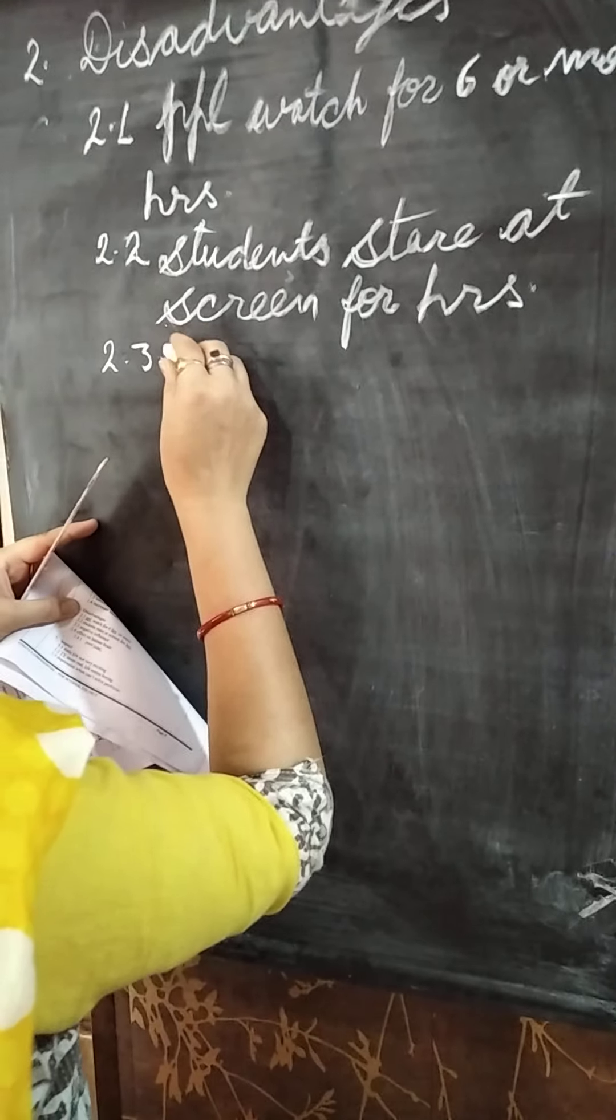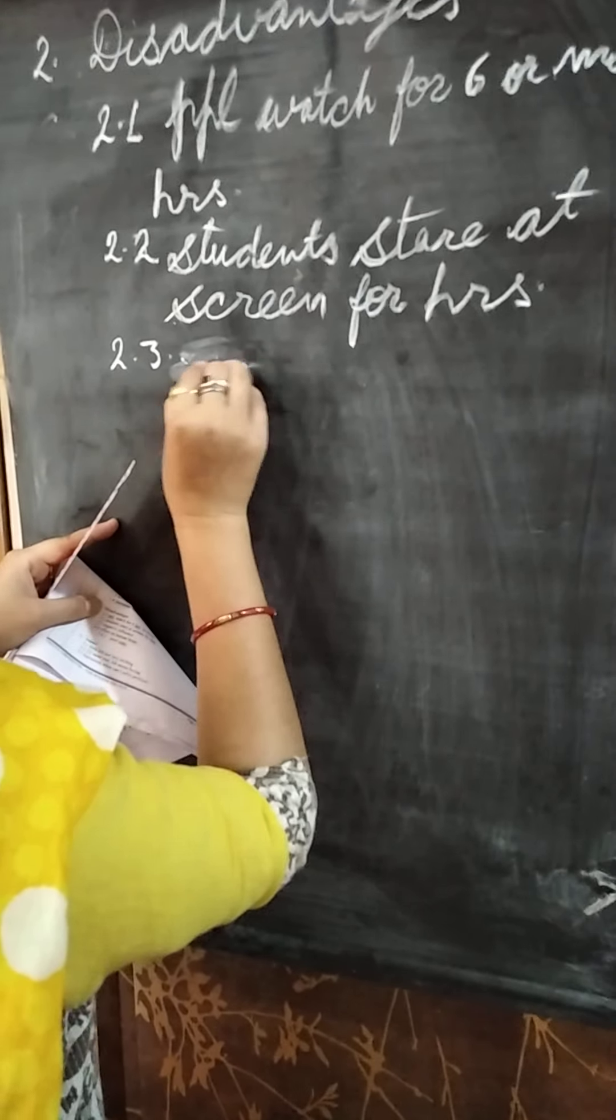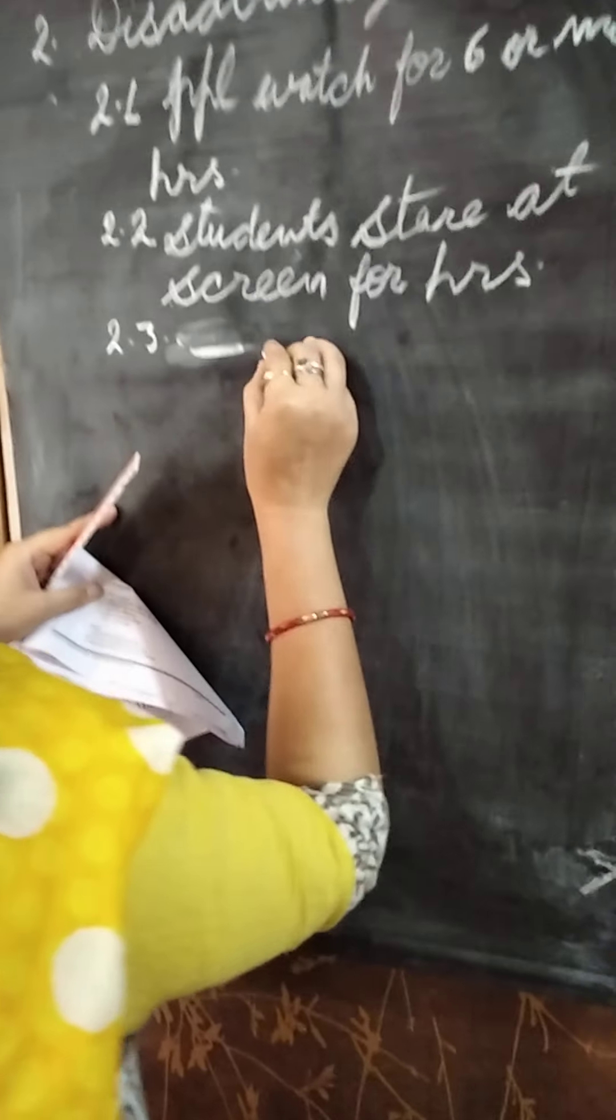Students watch or stare at screen for hours. Again, abbreviation used. Then, negative influence. Negative, you can write like this. Negative influence.